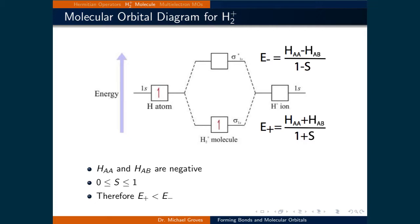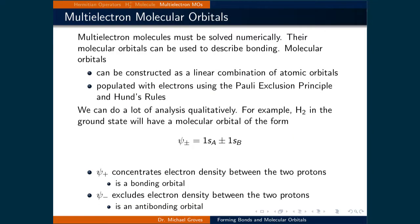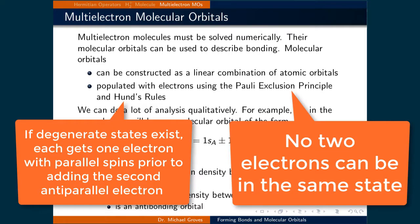As we will see later, we can use these diagrams to qualitatively describe the strength of a bond between two atoms. Leaving H2 plus, we are now going to talk about multi-electron molecules. Multi-electron molecules must be solved numerically. This is because the electron-electron interaction in the Schrodinger equation makes the differential equation impossible to solve analytically. The molecular orbital solutions to the Schrodinger equation can be used to describe bonding. Similar to the H2 plus case, molecular orbitals can be constructed from a linear combination of atomic orbitals, which are then populated with electrons using the Pauli exclusion principle and Hund's rules.